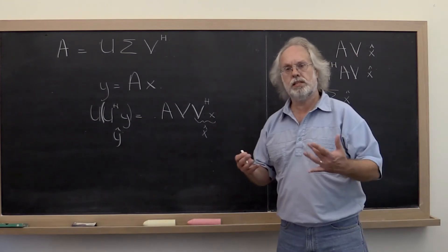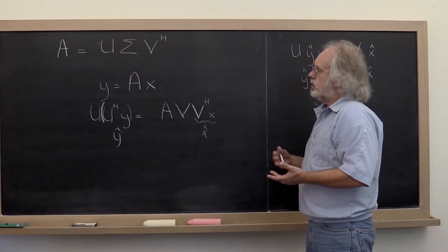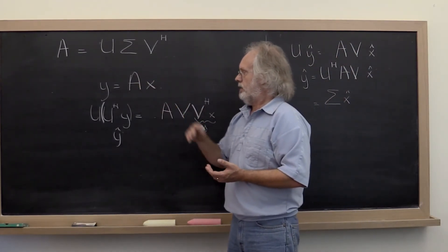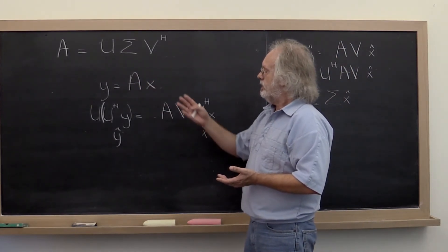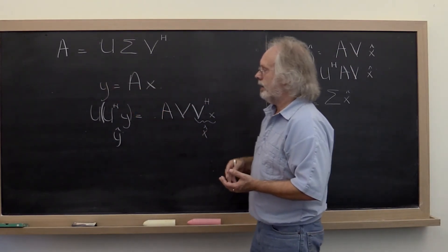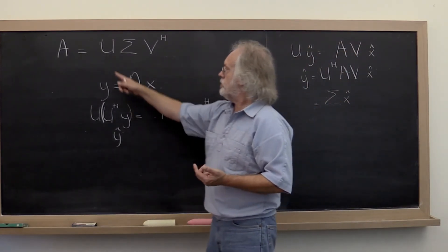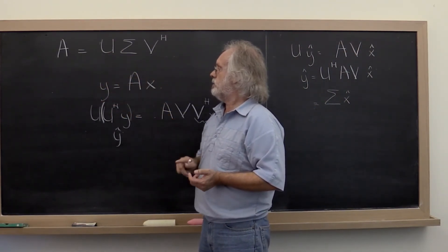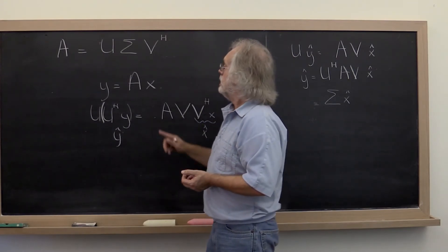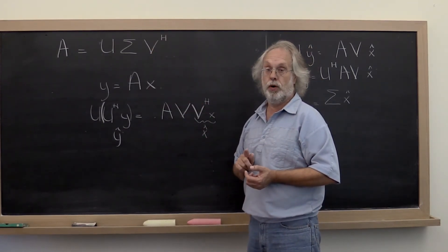So what does that mean? What it means is that when given the matrix A, if we view the input vector x and the output vector y in the correct basis, namely we use the columns of u as the basis in which we view y and we use the columns of v as the basis in which we view x,